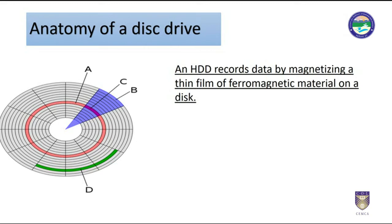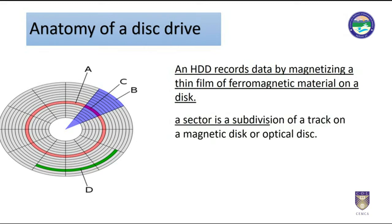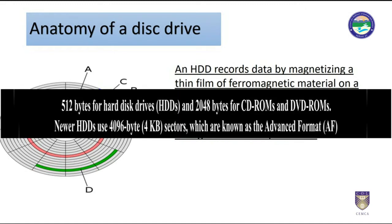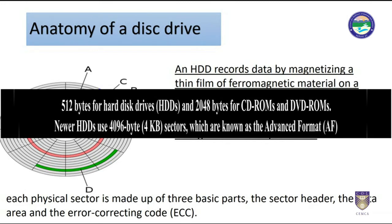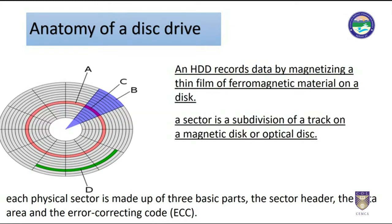In computer disk storage, a sector is a subdivision of a track on a magnetic disk or optical disk. Each sector stores a fixed amount of user-accessible data — traditionally 512 bytes for hard disk drives, and 2048 bytes for CD-ROMs and DVD-ROMs. Newer hard disk drives use 4096 bytes, i.e., 4KB sectors, also known as advanced format. Geometrically, the word sector means a portion of a disk between two radii and a corresponding arc, shaped like a slice of pie.